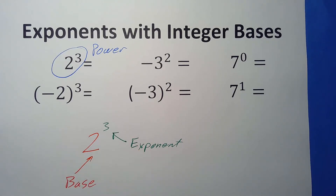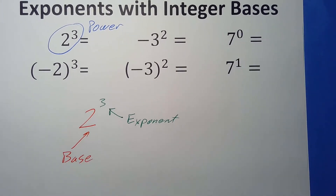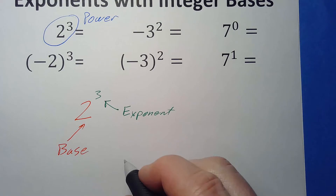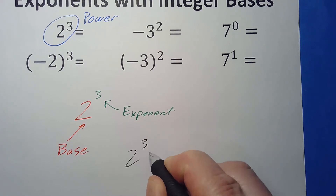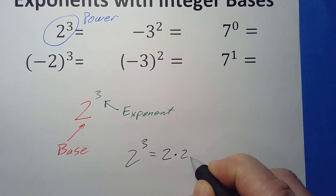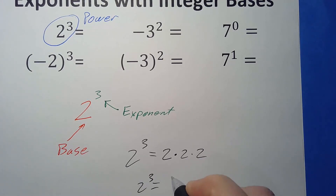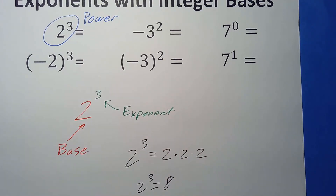Let's do a couple of quick examples — hopefully this is a lot of review, but just to have a starting point. Two to the third means two times two times two, so two to the third equals eight.